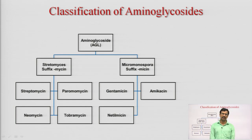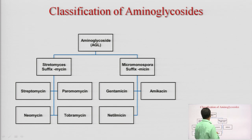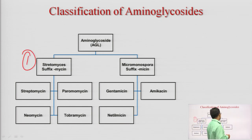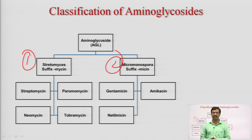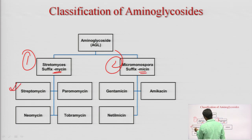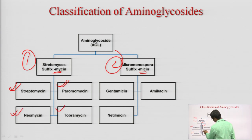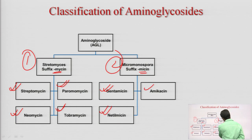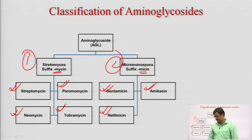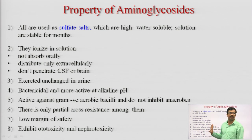Aminoglycosides are classified into two categories depending on their origin. Those isolated from Streptomyces include streptomycin, paromomycin, neomycin, and tobramycin (suffix: MYCIN). Those isolated from Micromonospora include gentamicin, netilmicin, and amikacin (suffix: MICIN). The list is long; we are focusing on the most important ones.